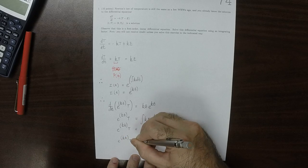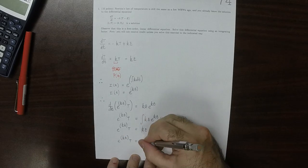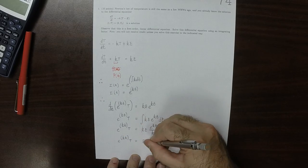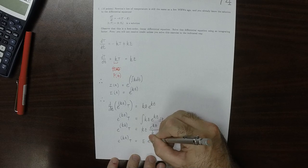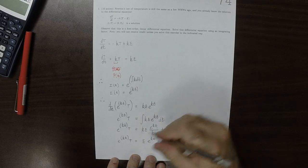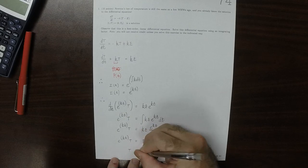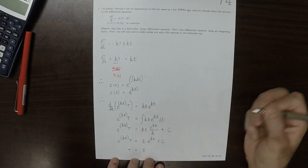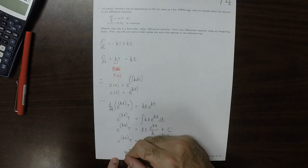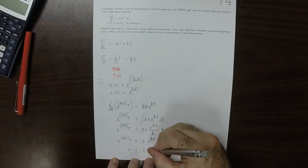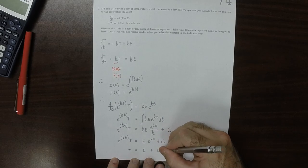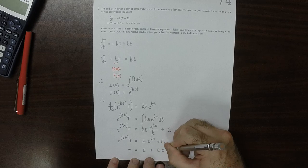Exponential K T big T is E exponential K T plus a constant, and then solve for big T. T is just big E and then plus C exponential negative K T.